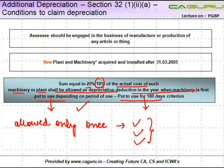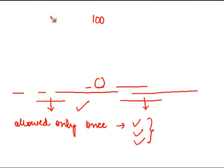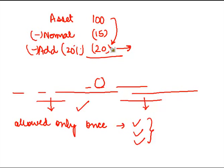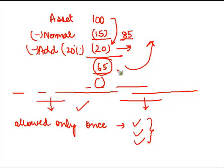One other important point: suppose you acquire an asset for ₹100. Your normal depreciation is ₹15 and your additional depreciation at 20% is ₹20. This value of ₹20 is also to be reduced from the cost of the asset. So 100 minus 15 minus 20 gives you ₹65. Next year you will be entitled to depreciation on ₹65, not on ₹85. So ₹65 is the correct written-down value for depreciation for next year.